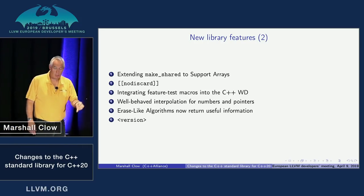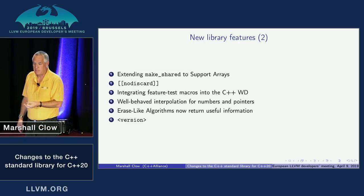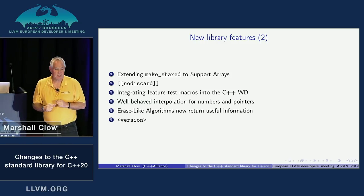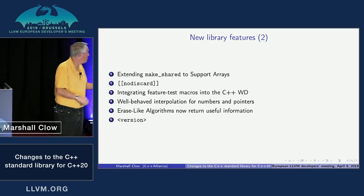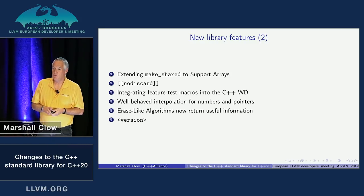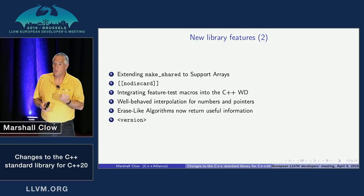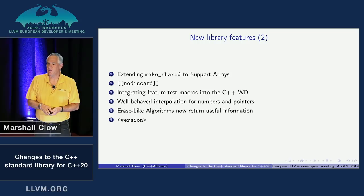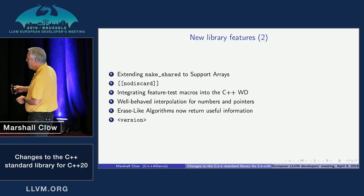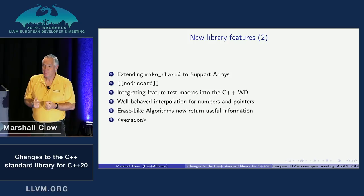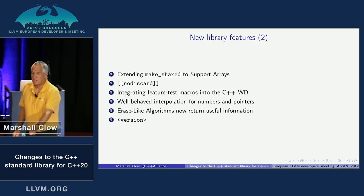In C++17 we got shared pointers to arrays, and now we have make_shared for arrays. We've also embraced the C++17 attribute syntax and started putting [[nodiscard]] on things in the standard library. nodiscard means if you call a routine and don't do anything with the return value, you'll get a compile error. The most common example is vector::empty — it returns a boolean telling you whether the vector is empty.